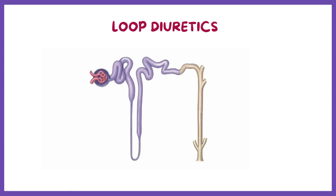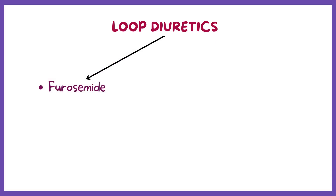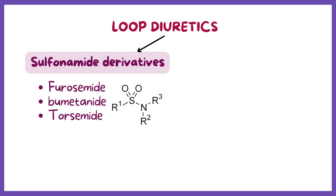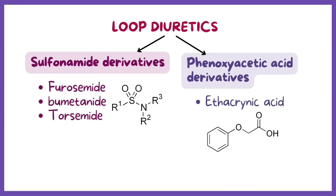Loop diuretics act on the loop of Henle. To be more specific, they mainly target the thick ascending limb. Furosemide is the prototypical loop agent. Furosemide, bumetanide, and torsemide are sulfonamide derivatives. Ethacrynic acid is a phenoxyacetic acid derivative; it is not a sulfonamide but acts by the same mechanism.